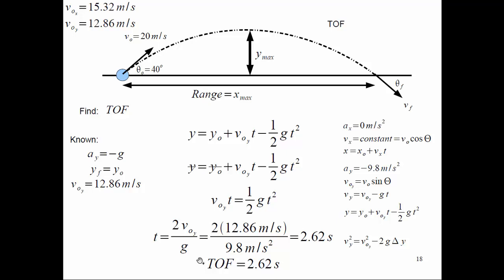Can you estimate the range? In the X direction we're traveling a constant 15 meters per second, and we're doing that for almost 3 seconds. So 15 times 3 is about 45 — I'd quickly estimate it will land about 45 meters away. Let's check: X equals the X velocity times the time of flight, which comes out to about 40.14 meters.